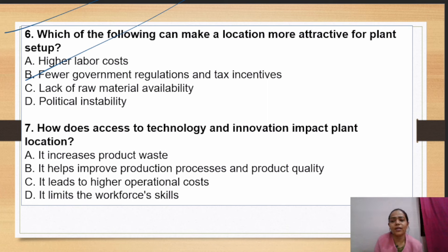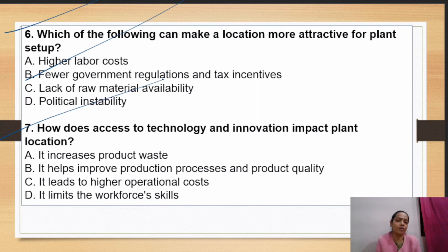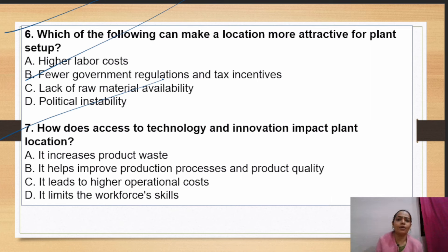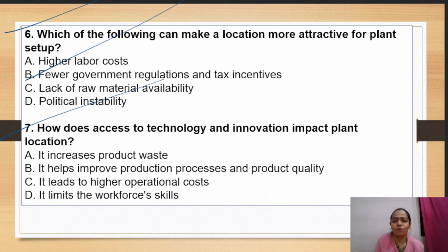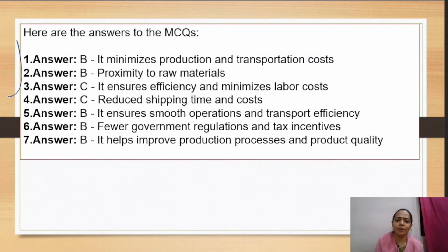How does access to technology and innovation impact plant location? It helps improve the production process and product quality. Of course, the right technology at the location helps improve production process and product quality. So this is all for question 7 which we have discussed.